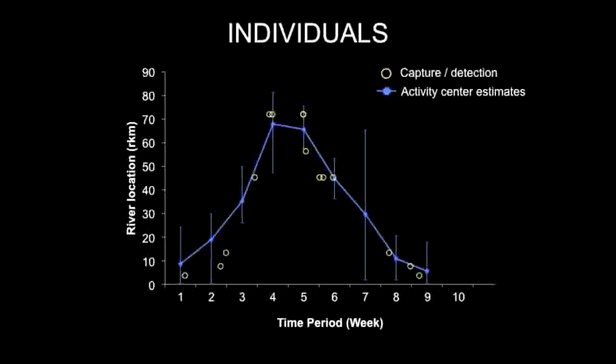By correlating movement, we were able to estimate an individual's location even when it was not observed in a period, although with higher uncertainty.